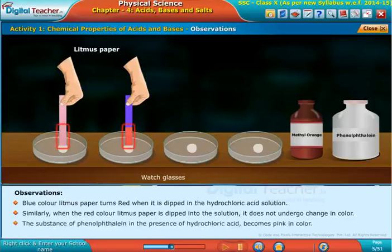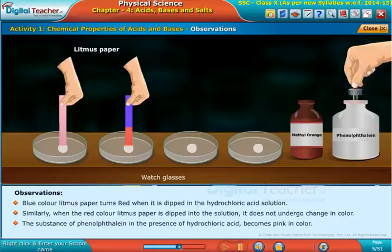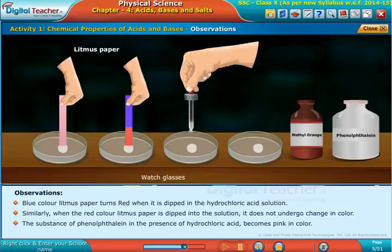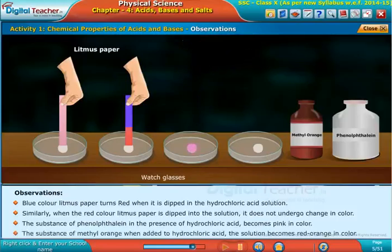The substance of phenolphthalein in the presence of hydrochloric acid becomes pink in color. The substance of methyl orange when added to hydrochloric acid, the solution becomes red orange in color.